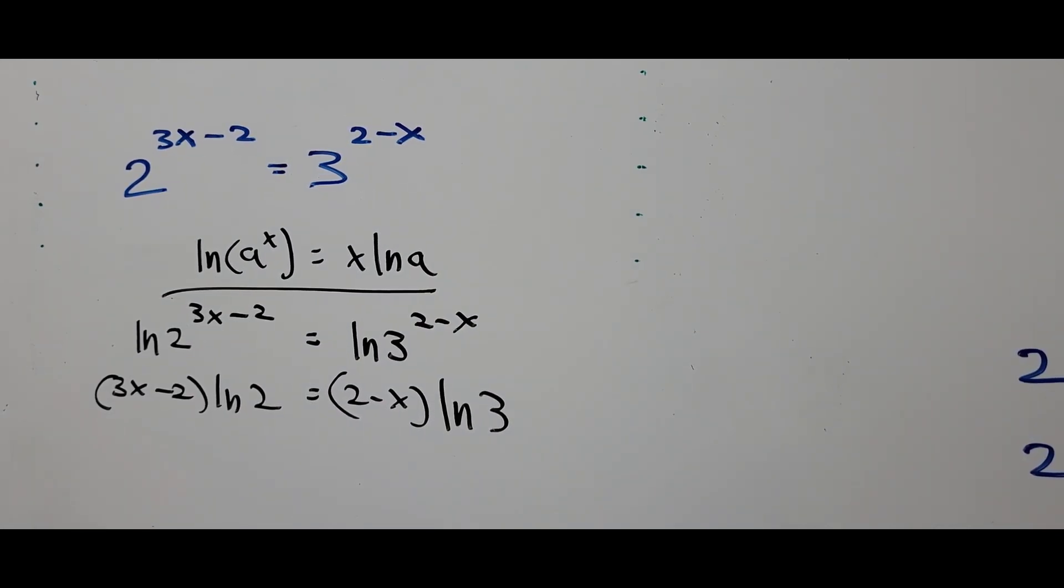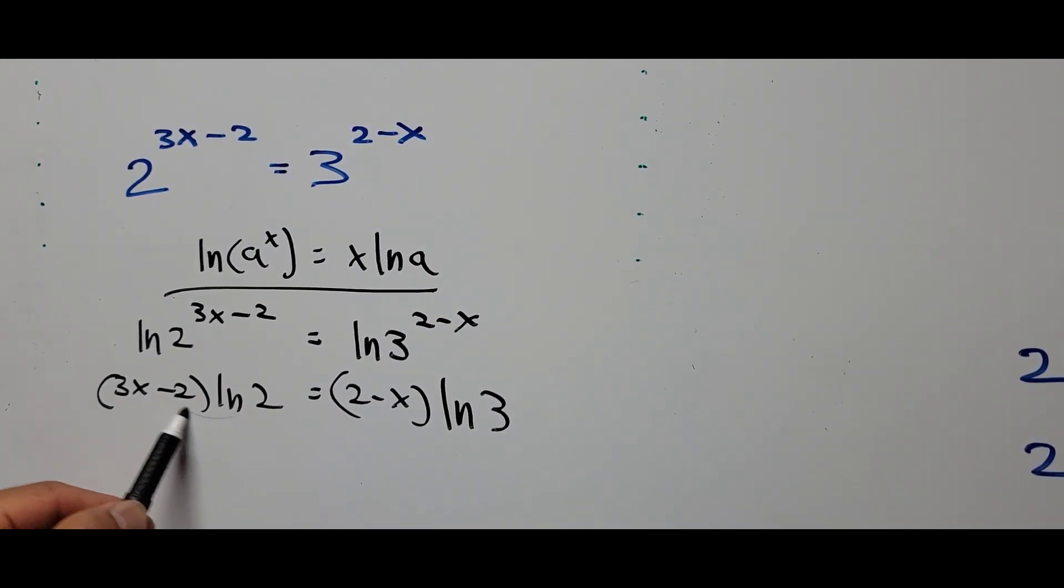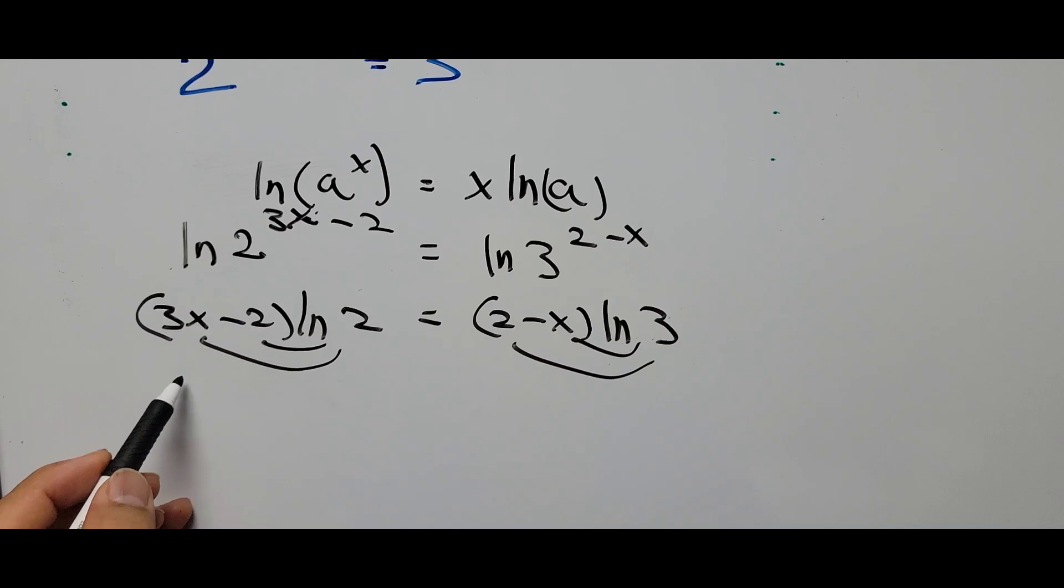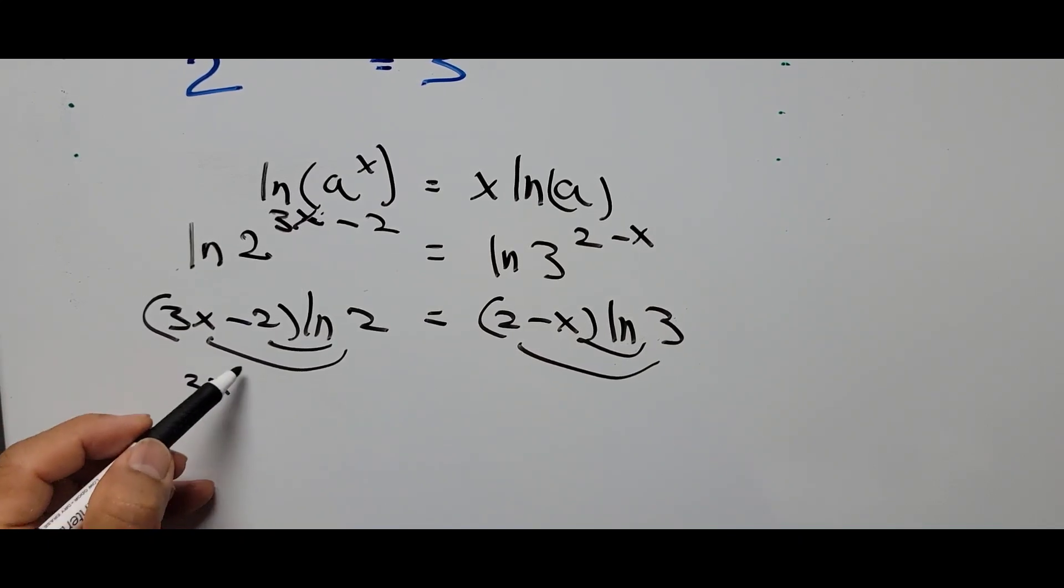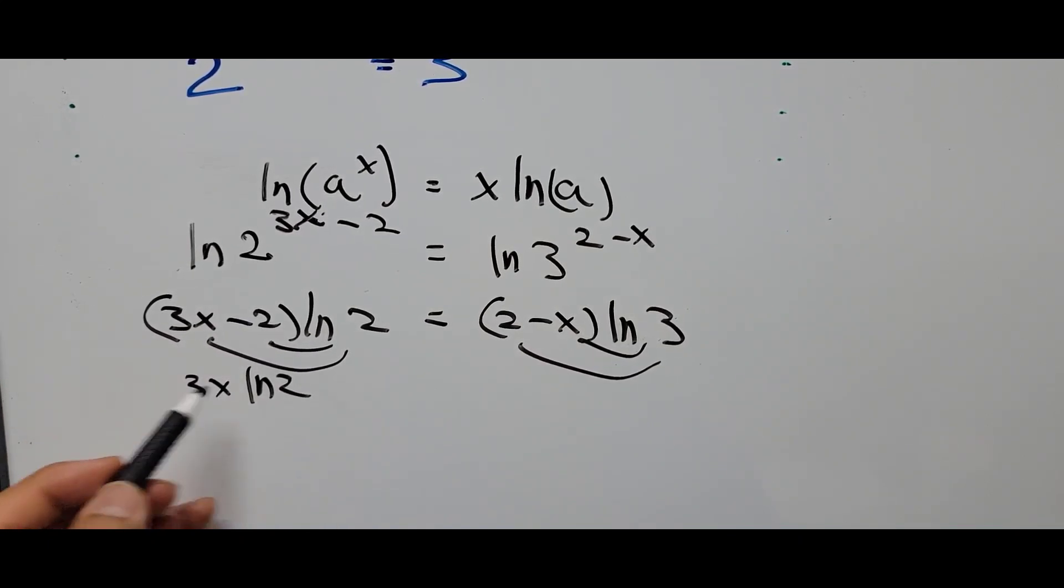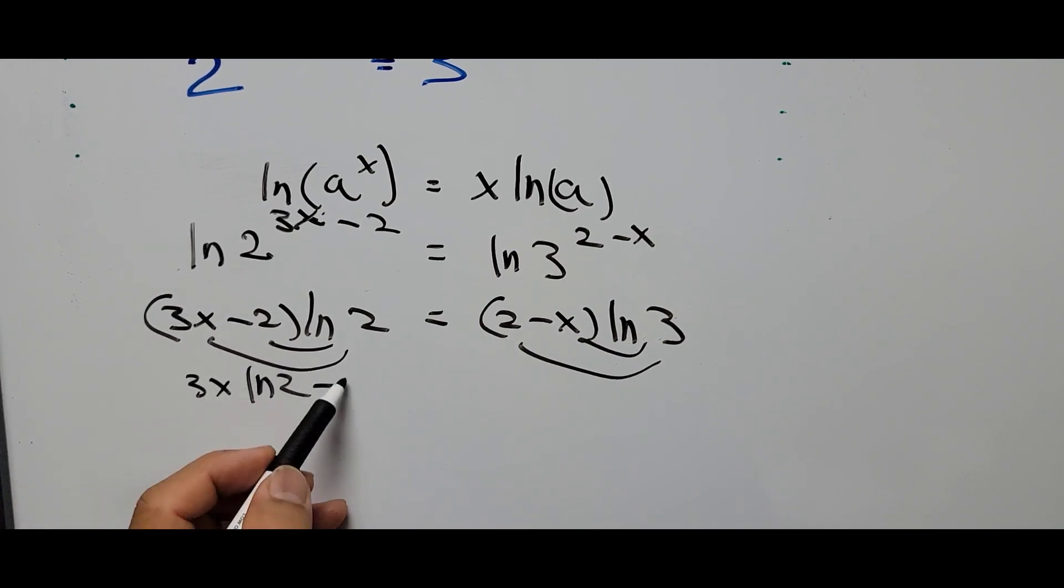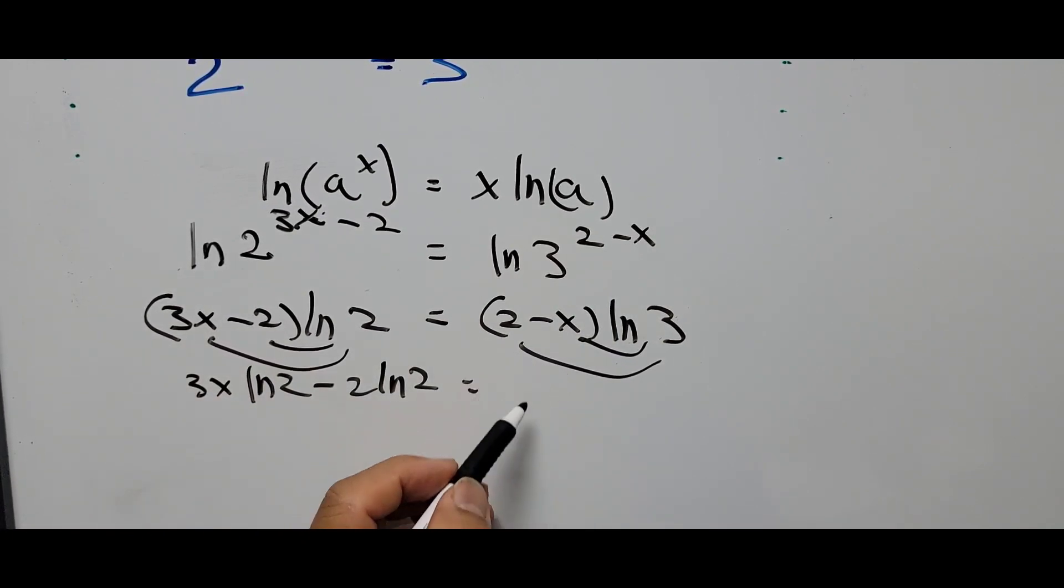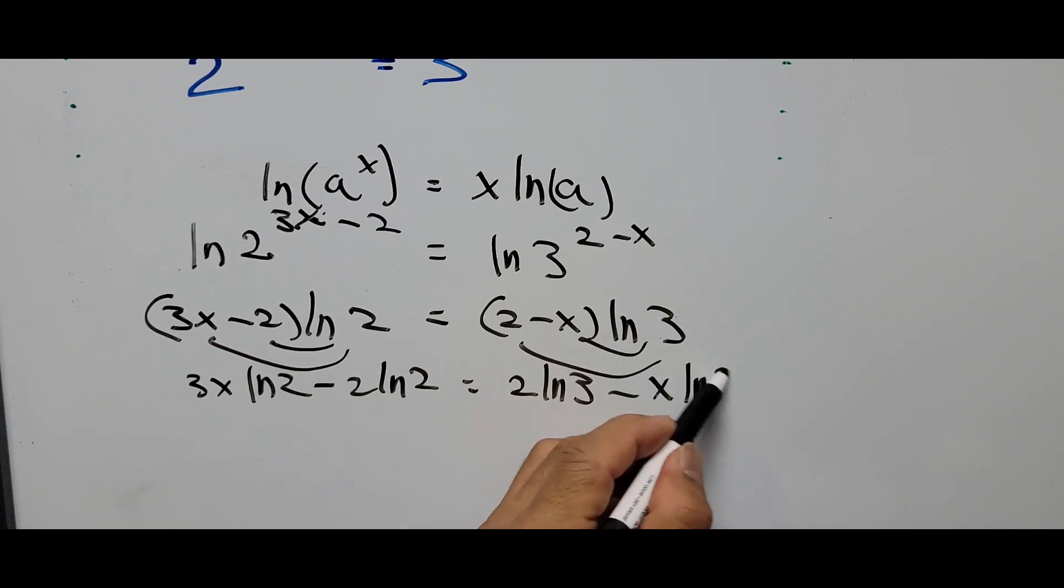In here we'll be using the distributive property. We'll apply this to that and that is the same thing on here. So 3x ln of 2 minus 2 ln of 2 equals 2 ln of 3 minus x ln of 3.